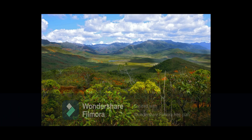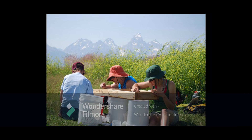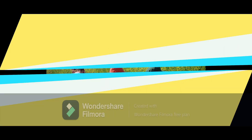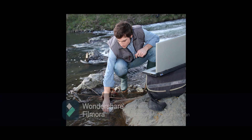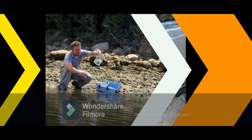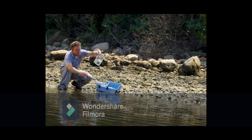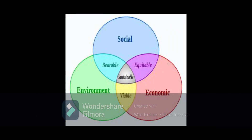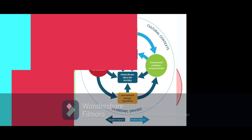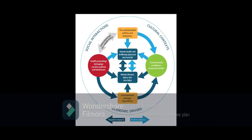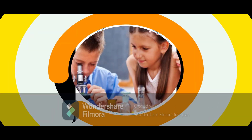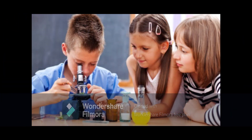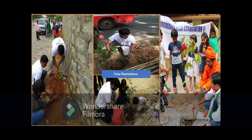The long-term aims of environmental education are to improve management of the environment and provide satisfactory solutions to environmental issues; to provide opportunities to acquire the knowledge, values, attitudes, commitments, and skills needed to protect and improve the environment; to encourage pupils to examine and interpret the environment from a variety of perspectives — physical, geographical, biological, sociological, economic, political, technological, historical, aesthetic, and ethical; and to arouse pupils' awareness and curiosity about the environment and encourage active participation in resolving environmental problems.